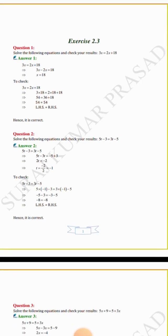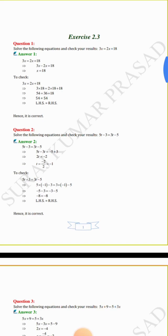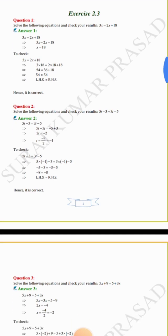Question number 2: solve 5t minus 3 equals 3t minus 5. We find the value of t. Moving terms: 5t minus 3t equals minus 5 plus 3, giving 2t equals minus 2. Sending 2 from LHS to RHS — it divides because it was multiplying t — so t equals minus 2 by 2, which gives t equals minus 1.